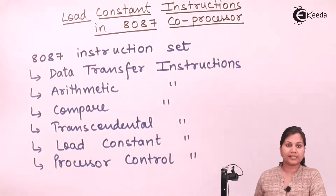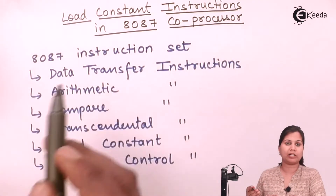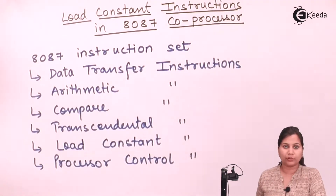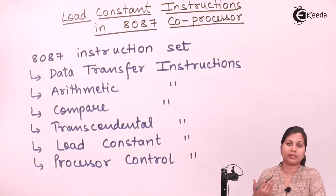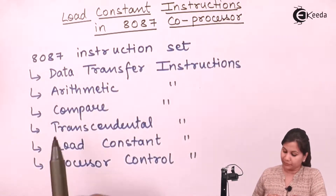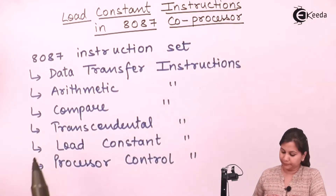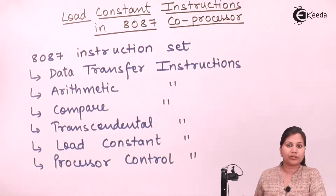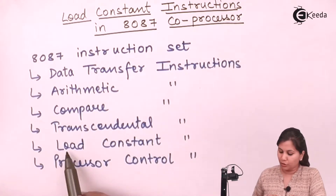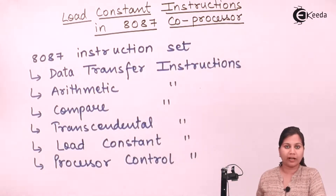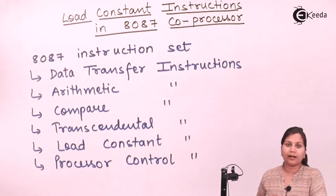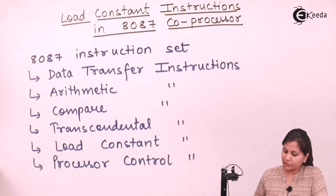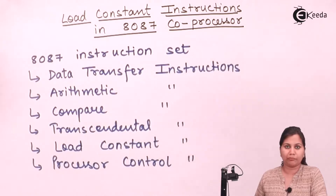These instructions are classified depending upon the function. Data transfer instructions transfer the data from one location to another. Arithmetic instructions perform arithmetic operations like addition, subtraction, multiplication, and division. Compare instructions compare two values. Transcendental instructions perform trigonometric and exponential operations. Load constant instructions load a constant value into the stack, and processor control instructions control the processor.